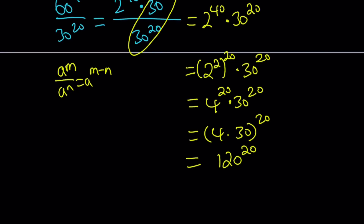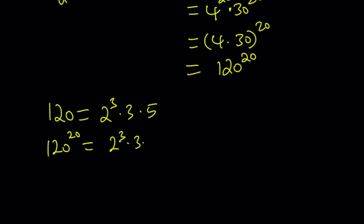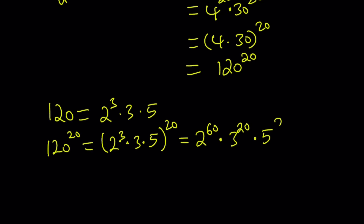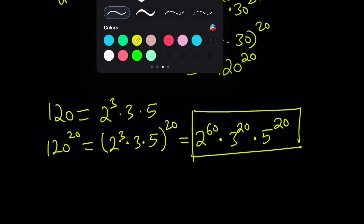Some people are not going to like this answer because it's not in the simplest form, so let's simplify. 120 can be written as 2 to the third power times 3 to the first times 5 to the first — that's the prime factorization. If you raise both sides to the power of 20, every factor will be raised to the power of 20, meaning every exponent will be multiplied by 20. So that's going to be 2 to the power of 60, multiplied by 3 to the power of 20, multiplied by 5 to the power of 20. That is the prime factorization of the answer — the simplest form, even though these are very large numbers.